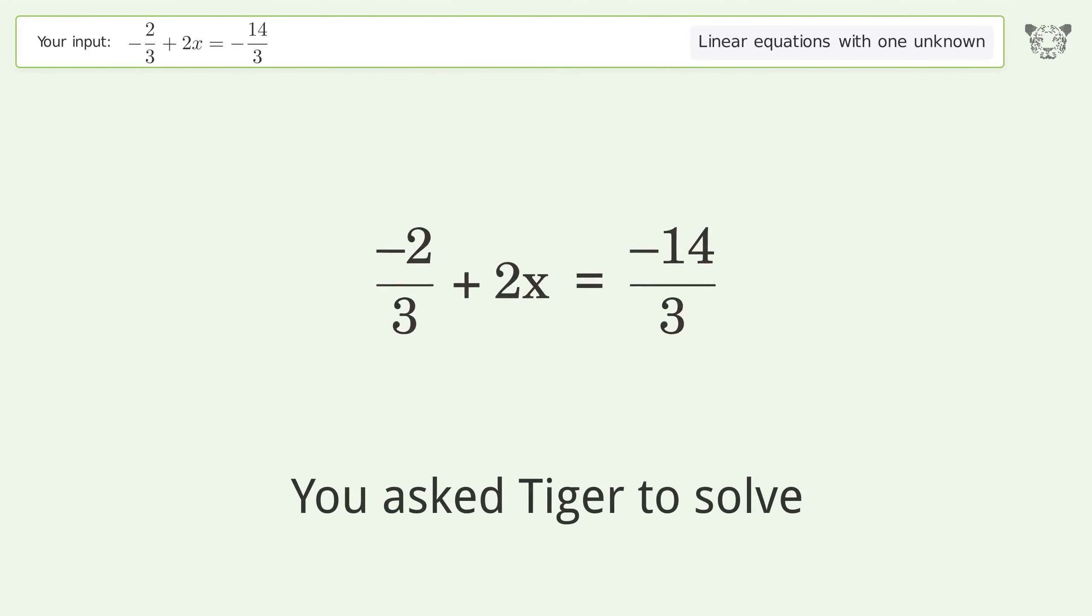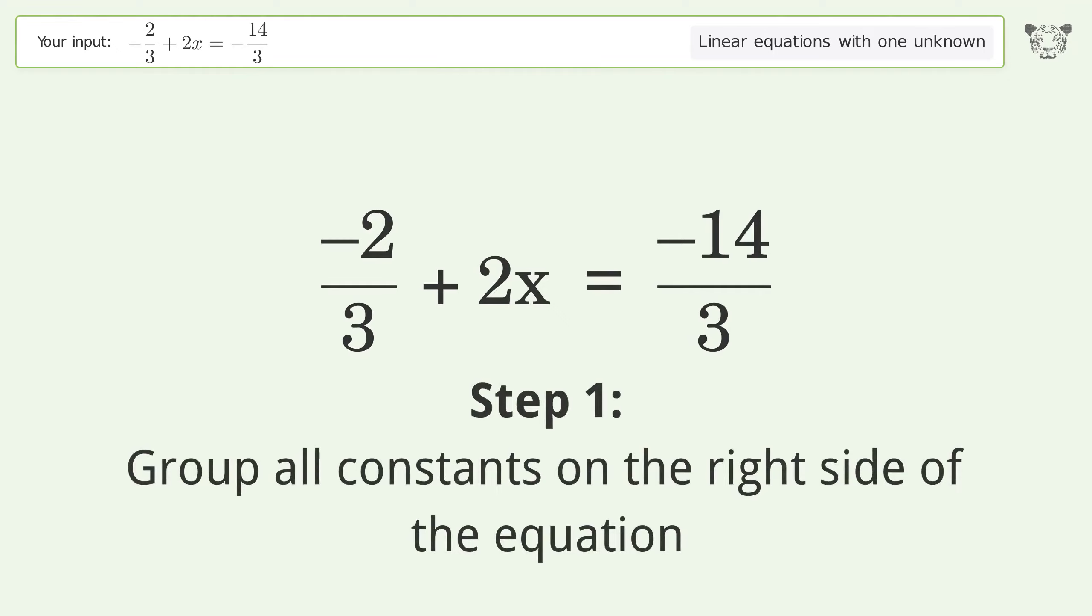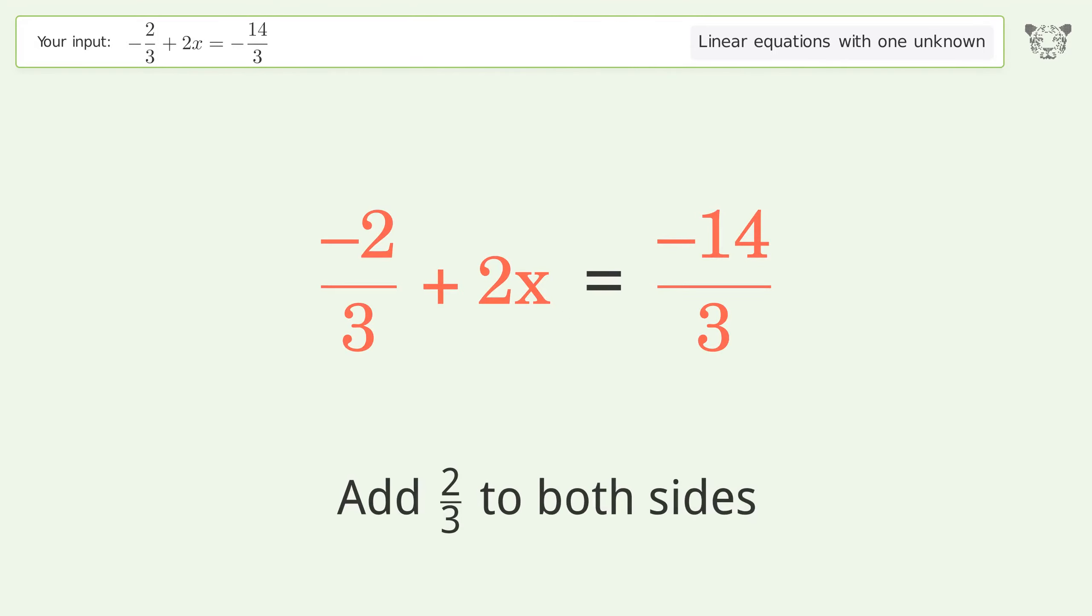You asked Tiger to solve this. This deals with linear equations with one unknown. The final result is x equals negative 2. Let's solve it step by step. Group all constants on the right side of the equation. Add 2/3 to both sides.